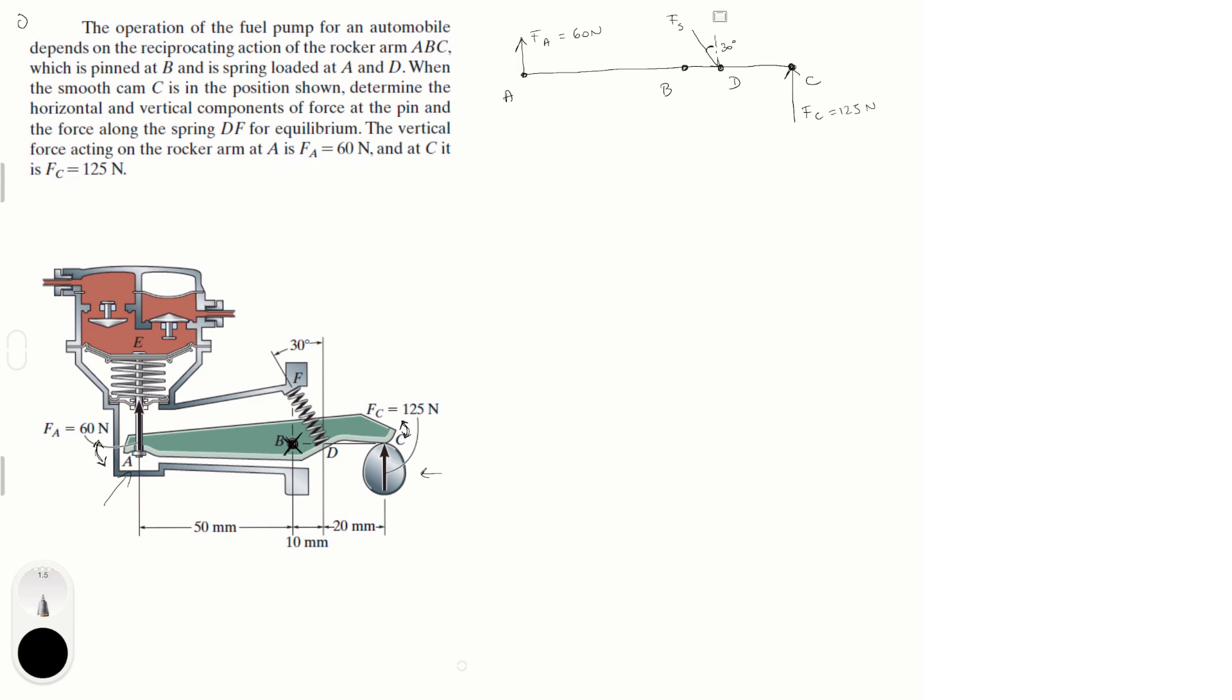Then we know that we're going to have reactions at B. Let's say we have a vertical reaction and a horizontal reaction. The vertical I'm going to call it F_B_Y and the horizontal is going to be F_B_X. So I hope that makes sense.